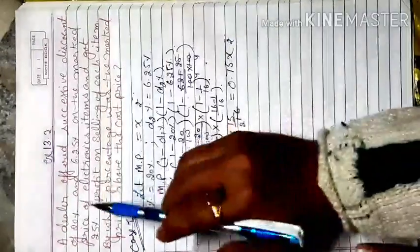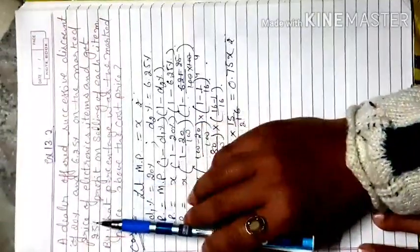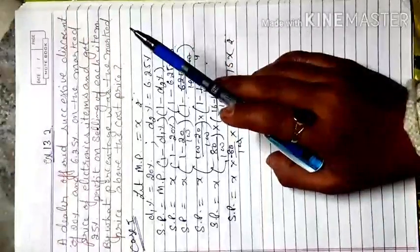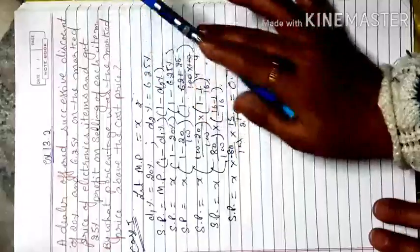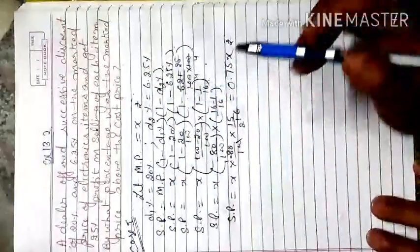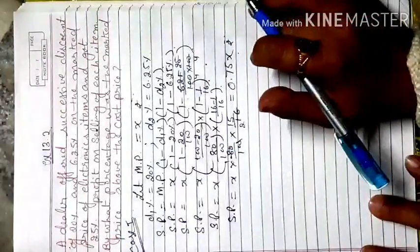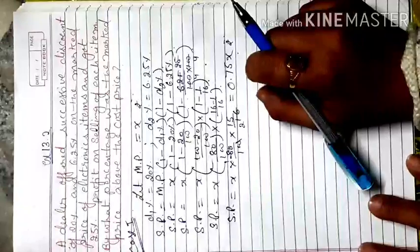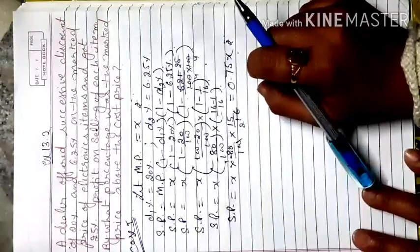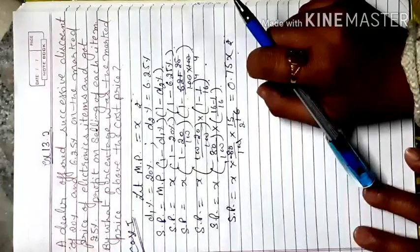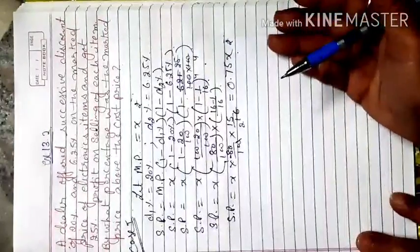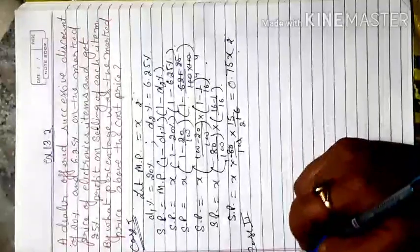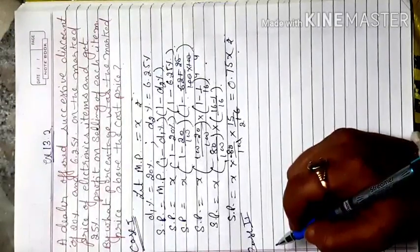Now for the second part: 25% profit on the selling of each item. We already found the selling price as 0.75x. Now in Case 2, we need to find the cost price. Once we have the cost price, we can find the difference between the mark price and cost price to determine the percentage difference.